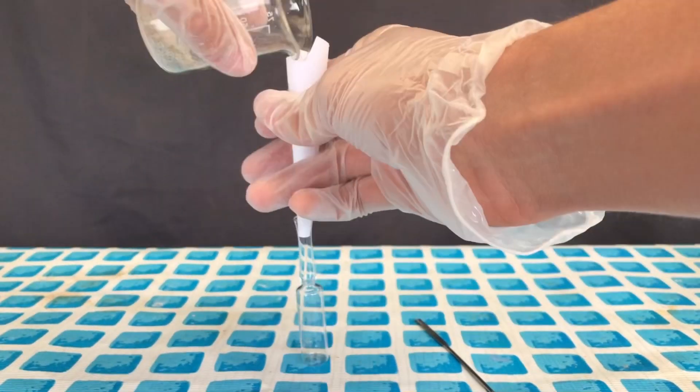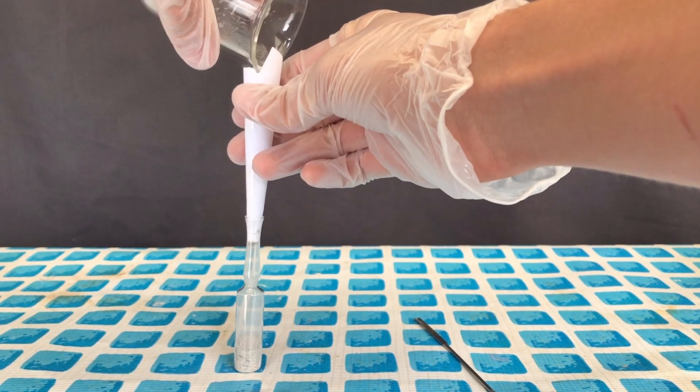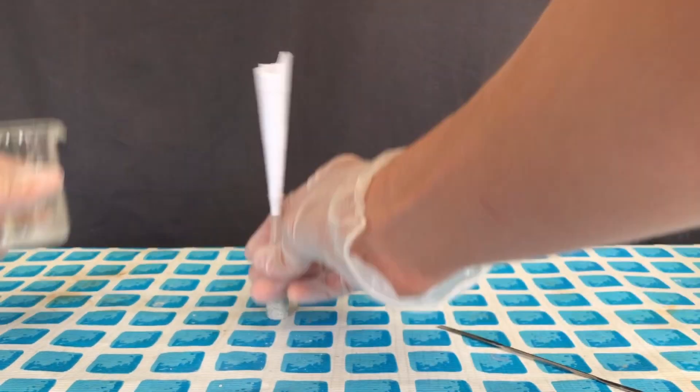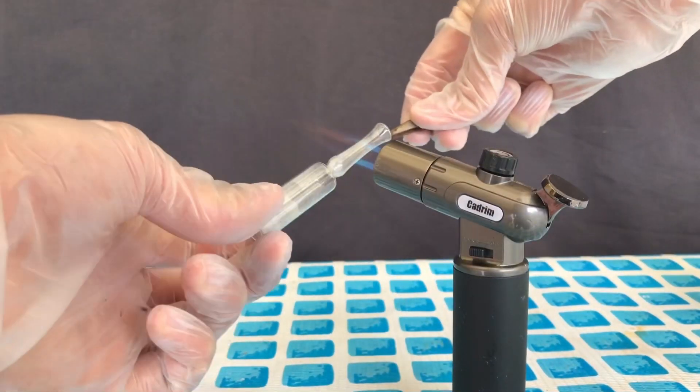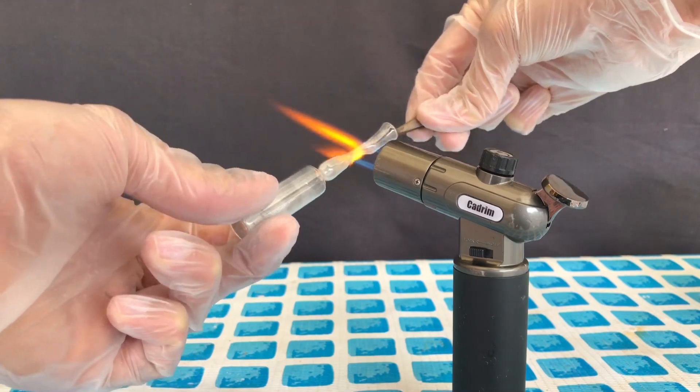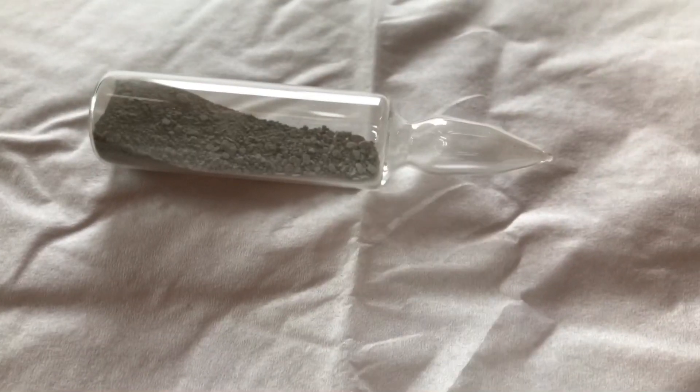The product unfortunately still contains some of the oxide we started with and this is probably because we used too little calcium. Using more calcium or using some flux like calcium chloride could increase the yield.